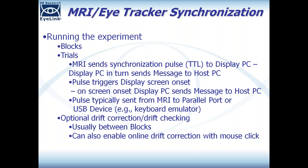There are also options for doing online drift correction with mouse click in an MRI environment. Sometimes participants shift position in a way that disrupts eye tracker accuracy, so instead of doing drift correction between every trial, you can do drift correction online with a mouse click. There are sections in the manual describing how to do this.